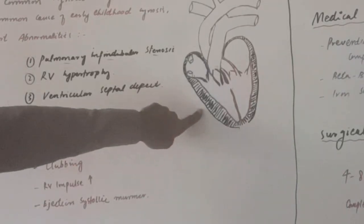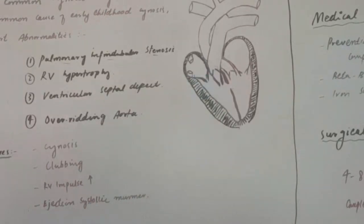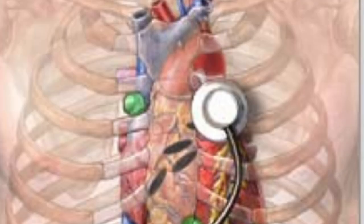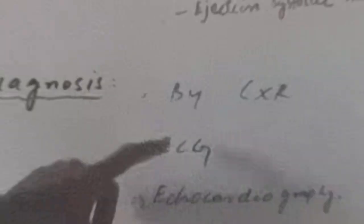Chronic low oxygen causes clubbing. The right ventricular impulse becomes increased because of right ventricular hypertrophy, so the force of the right ventricle increases. There is also an ejection systolic murmur, which occurs as a result of pulmonary infundibular stenosis — when blood in the systolic phase is going into the pulmonary artery, a murmur can be heard when we auscultate the chest of the patient.